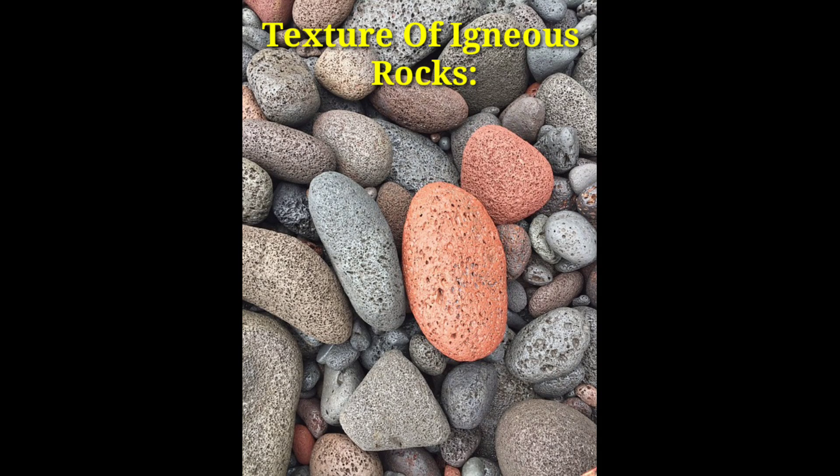The textures of igneous rocks. The texture of a rock refers to the details of its visible character. This includes the size, quality, and interrelations of its grains and the fabric they form. Larger scale features, such as fractures and layering, are considered rock structures in comparison.